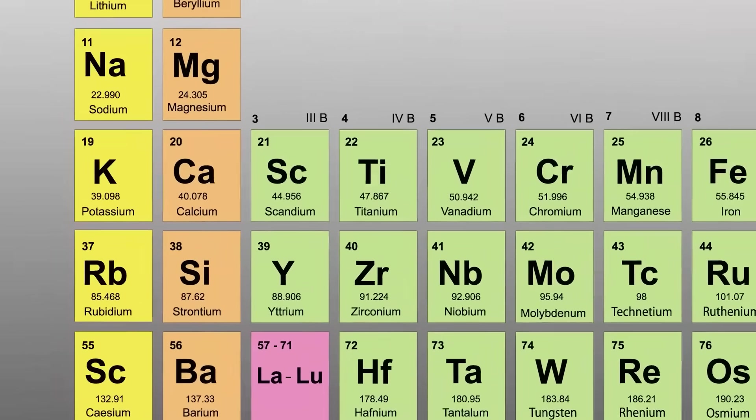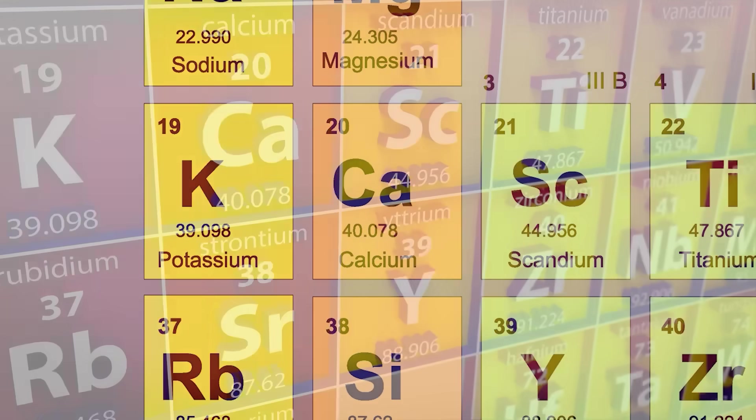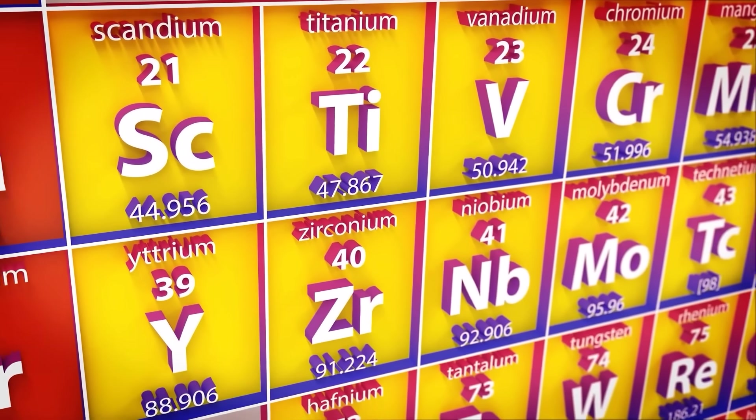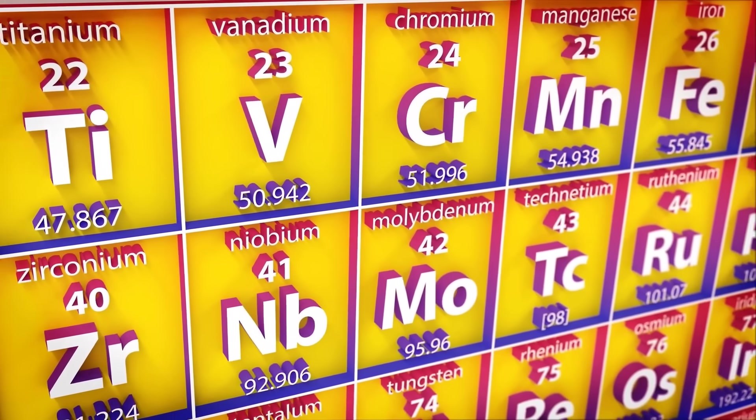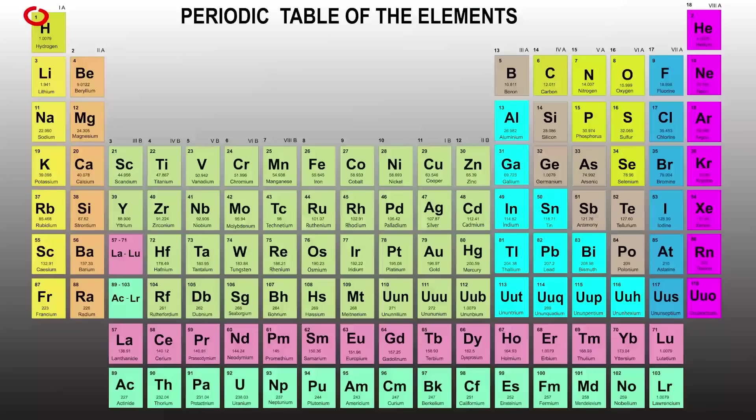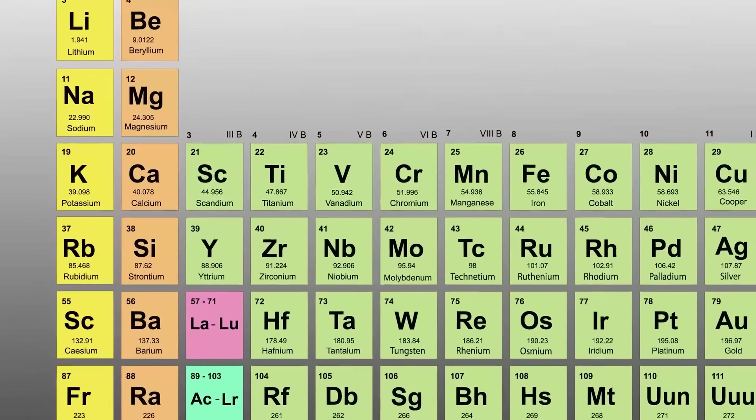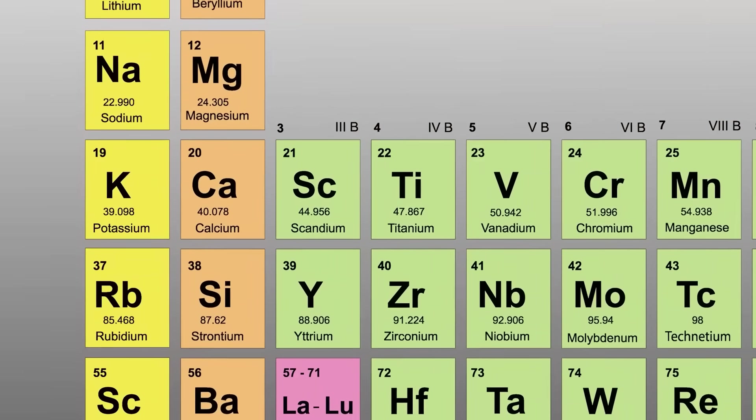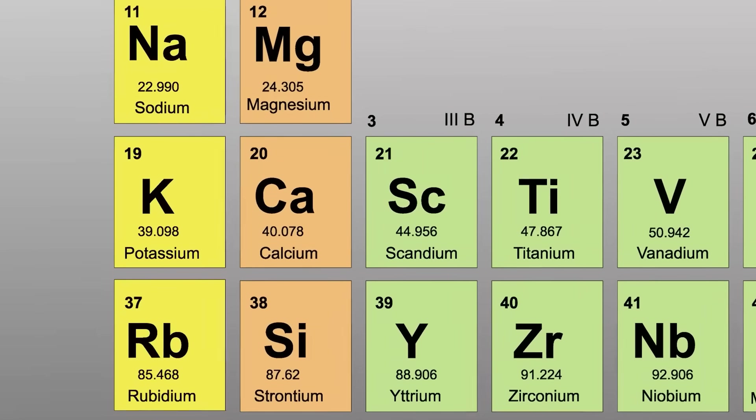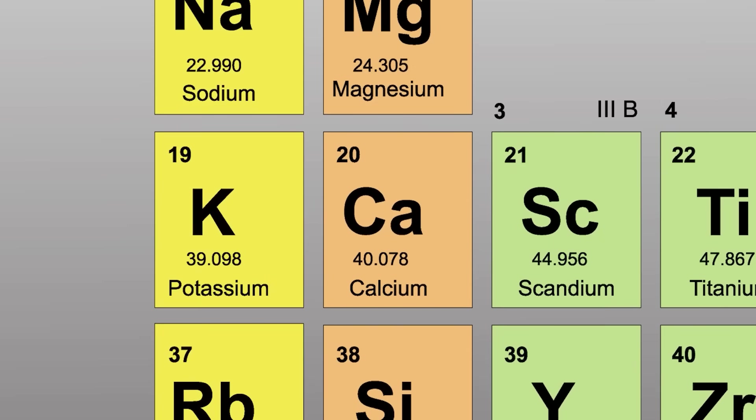This is the periodic table. It lists all the different types of atoms or elements known to man. What makes each of these elements unique? It's their atomic number. You'll find that all have a different number, which corresponds to the different number of protons in their nucleus. What you may find surprising is how changing just one proton in the nucleus results in a drastic difference in the properties of an element.